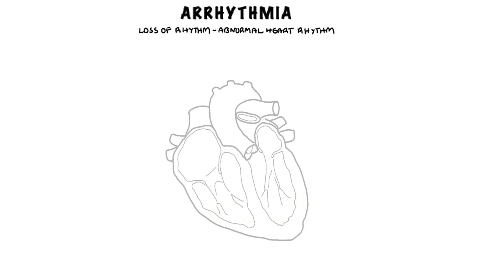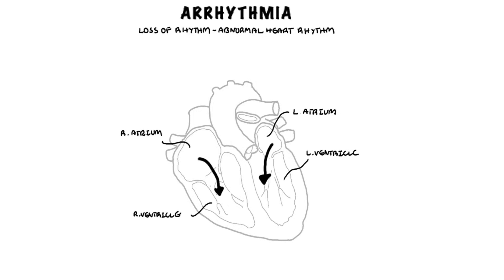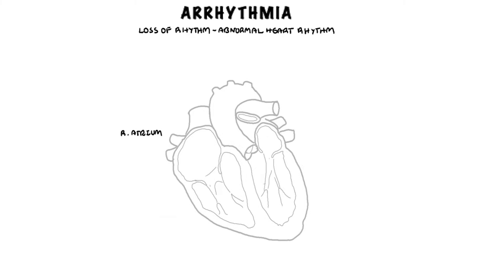The heart is made up of 4 chambers: the right and left atrium and the left and right ventricles. Contraction of the ventricles ejects blood out of the heart to the rest of the body, and all this is possible because of the amazing coordination of the heart's conduction system, which is responsible for the creation and propagation of an impulse to the atrial and ventricular myocardium.